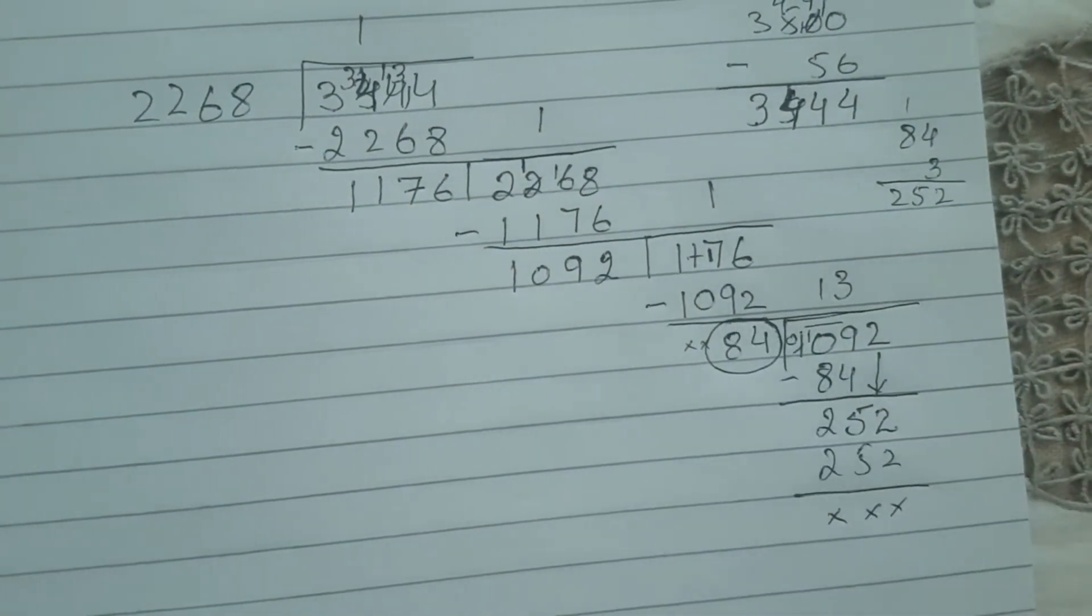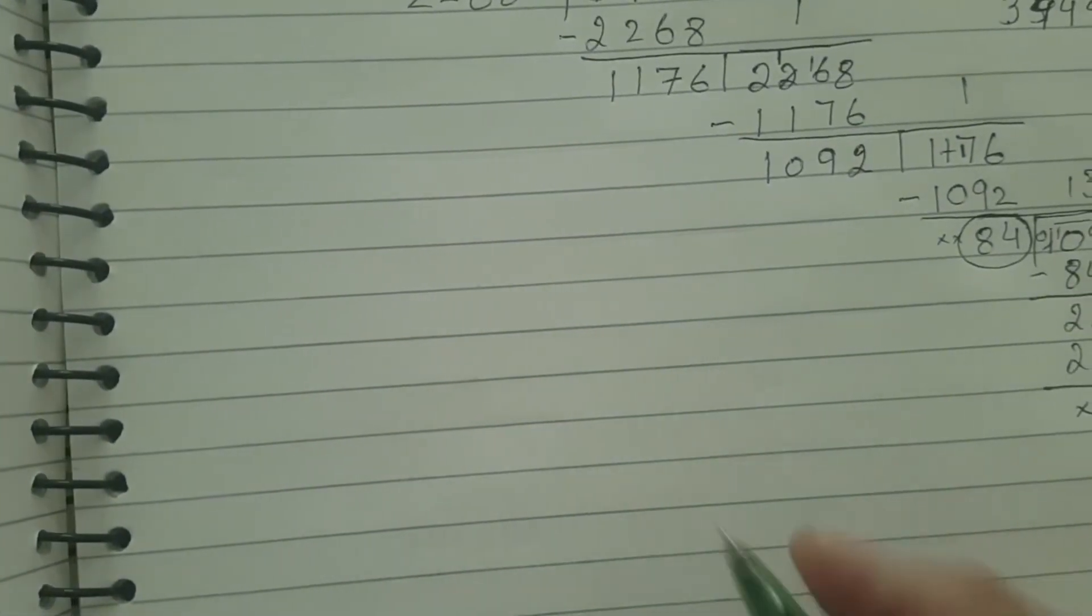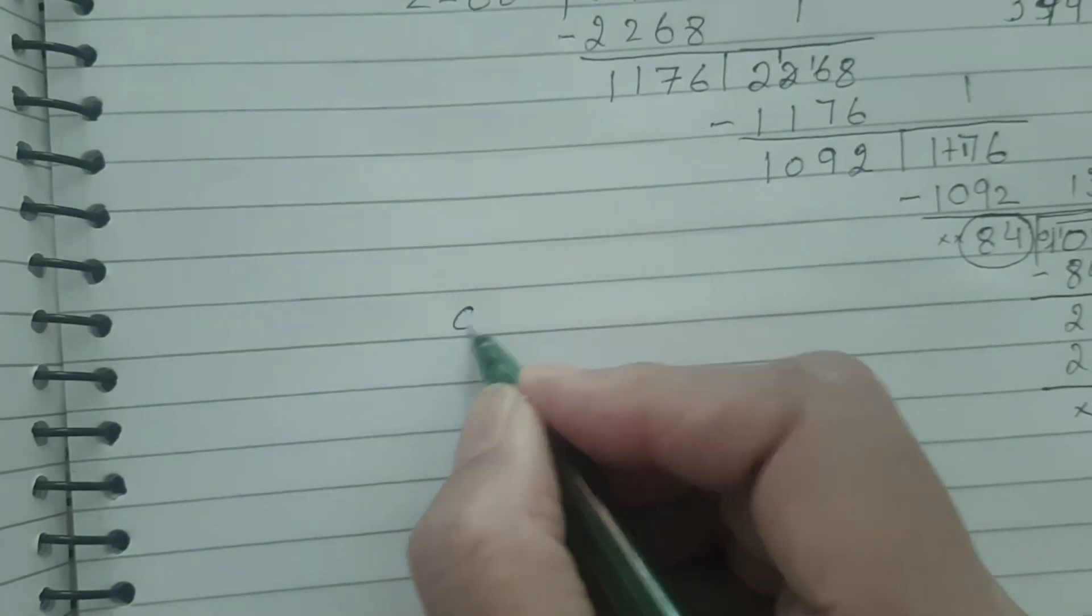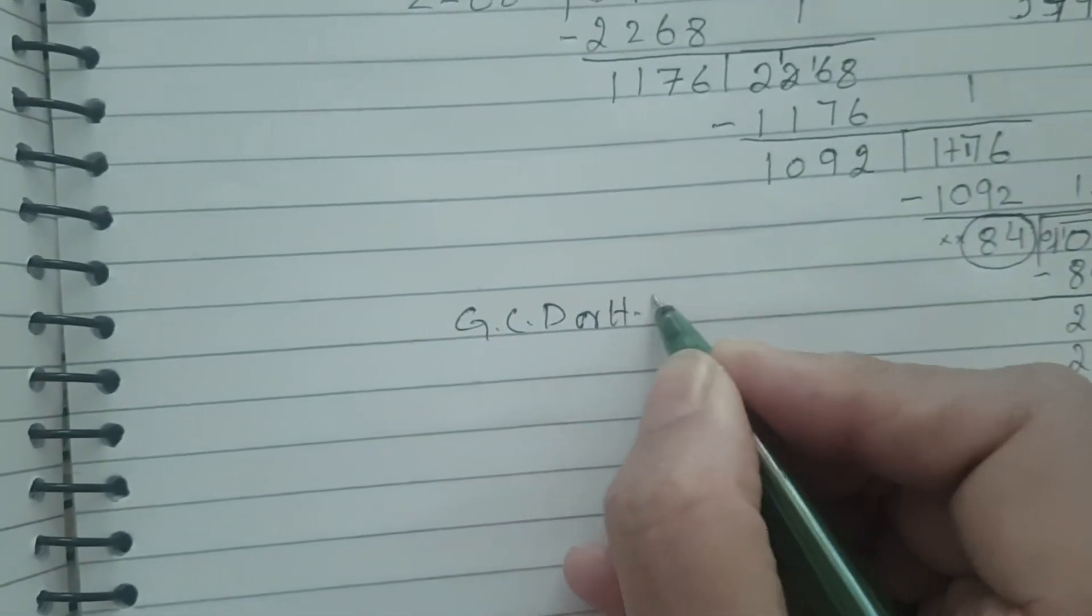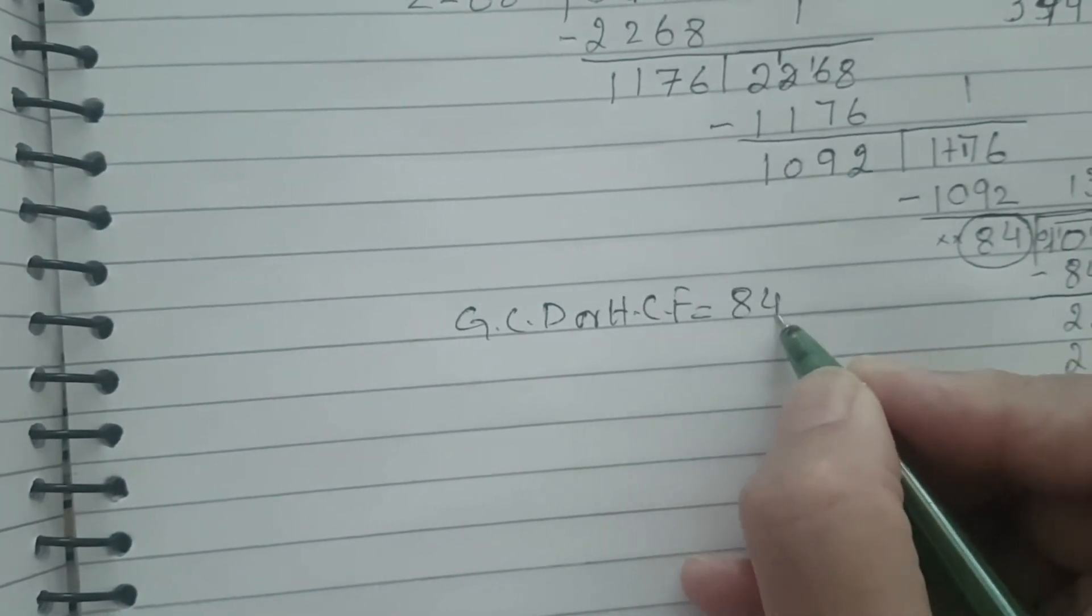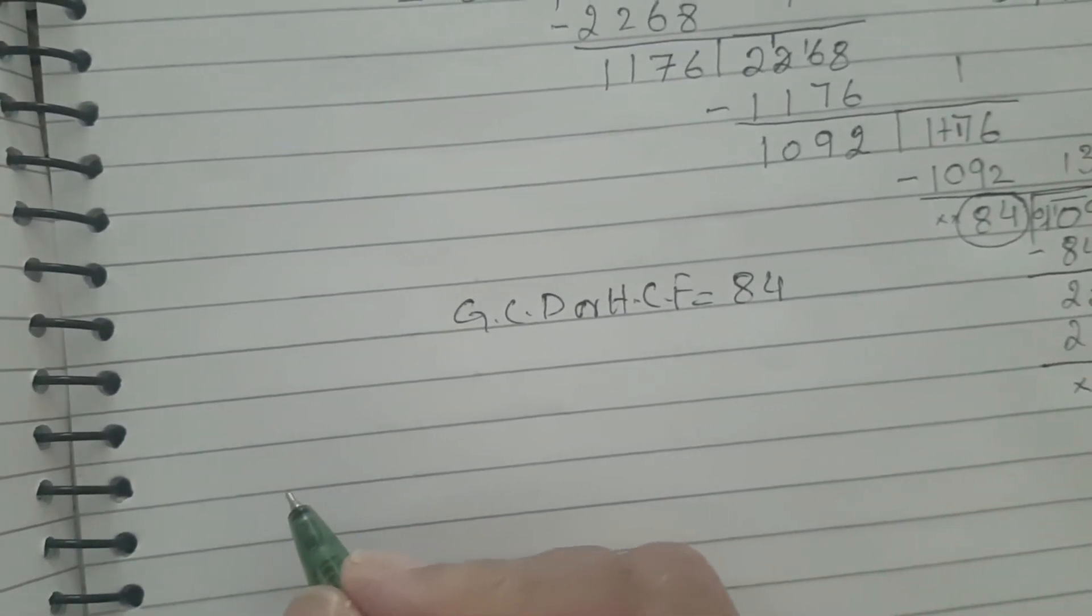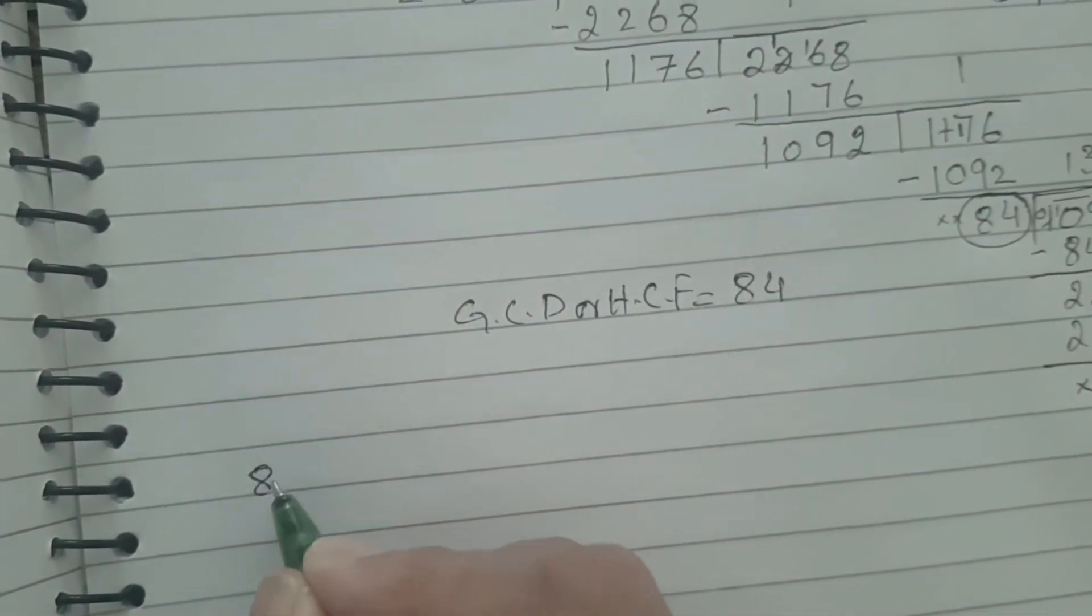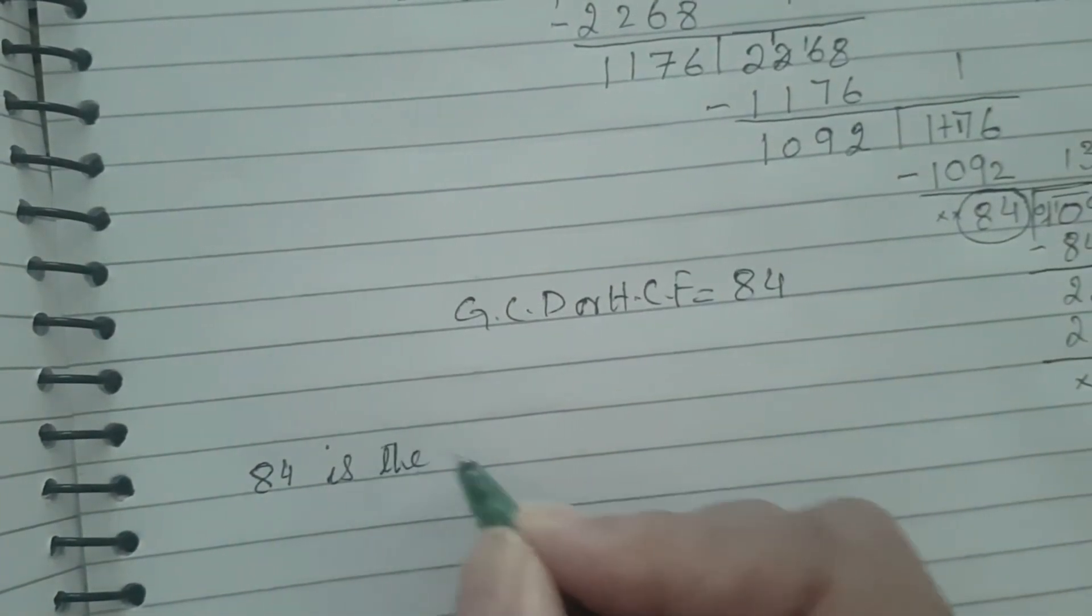So the last divisor is your highest common number or greatest common divisor. Write down GCD or HCF is 84. Write down the statement with the question because this is a problem sum.